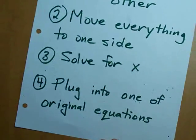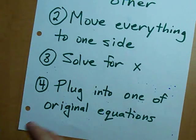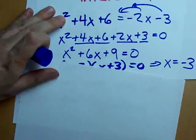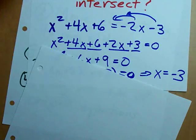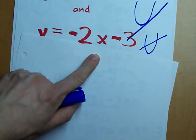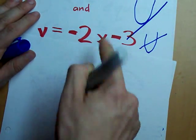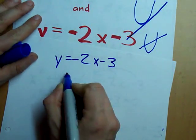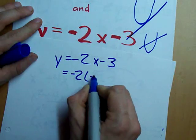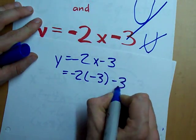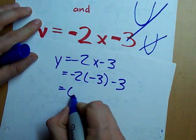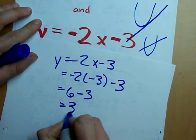What else do we do? We plug it back into one of the original equations. So, we need to take that minus 3 and put it back into one of these. I'm going to choose the easier one. Negative 2x minus 3. Negative 2. Plug in your value for x. I found negative 3. 6 minus 3. I get 3.